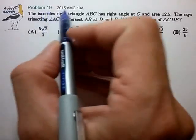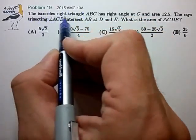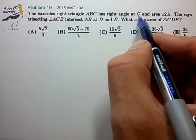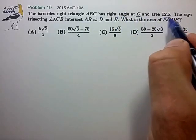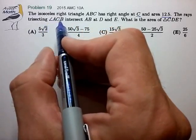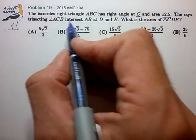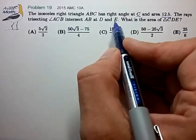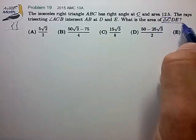Hi, this is problem 19 from the AMC 10A. Isosceles right triangle ABC has right angle at C and area 12.5. The rays trisecting angle ACB intersect AB at D and E. What is the area of triangle CDE?